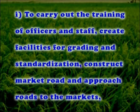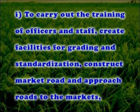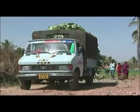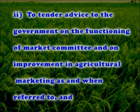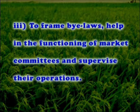State Agriculture Marketing Boards were established to supervise and provide guidance to market committees. Their main functions include carrying out training of officers and staff, creating facilities for grading and standardization, constructing market roads and approach roads, constructing market yards and sub-yards, establishing and maintaining board offices, tendering advice to the government on the functioning of market committees and improvements in agricultural marketing, and framing bylaws to help in the functioning of and supervise market committee operations.